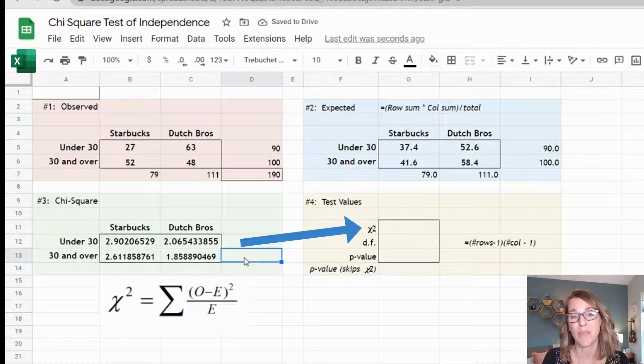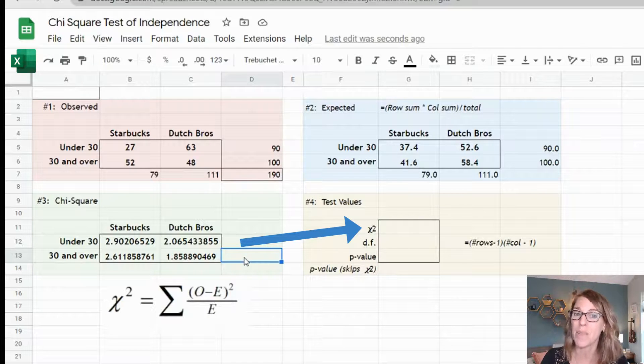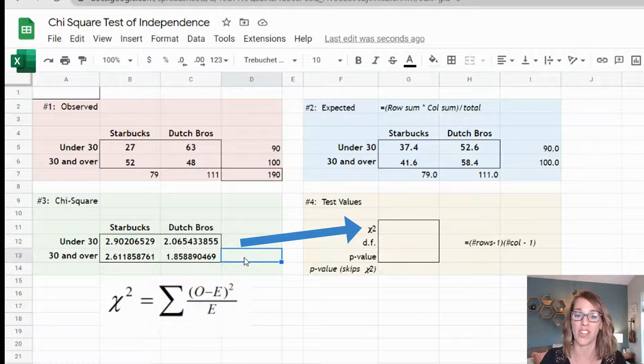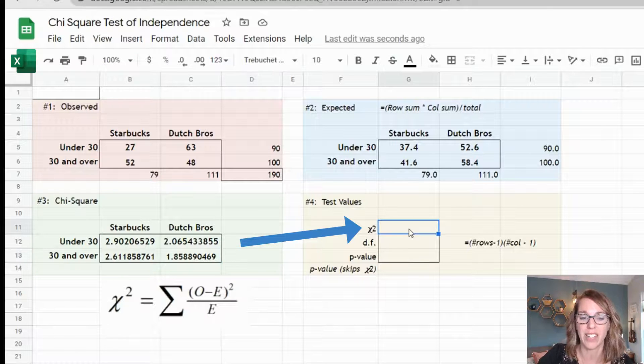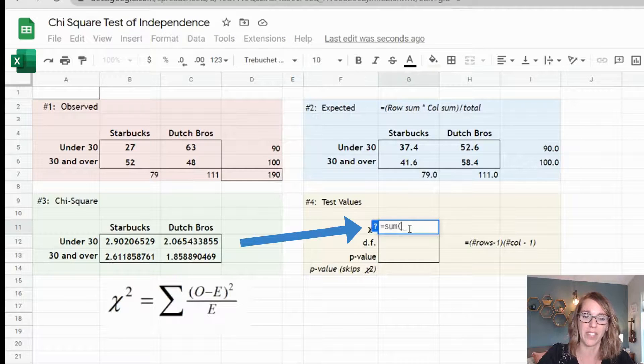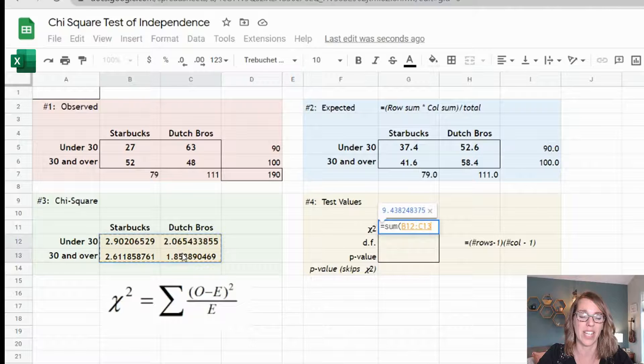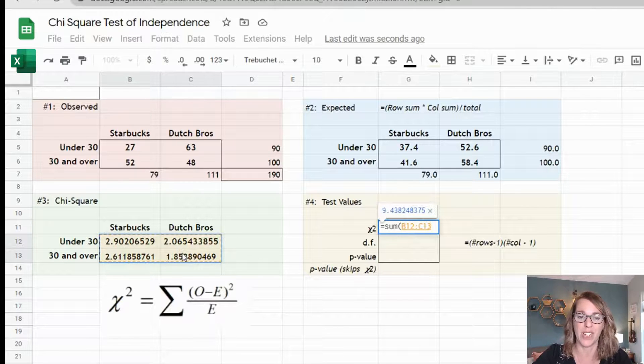Once I've computed this for each of my cells, I am ready to find my chi-square measure. I'm going to add up all of these values doing the summation in our formula. I'm going to move over to the cell next to chi-square here and type equals sum parenthesis, then click, drag and hold through the cells in my table over here, then enter.